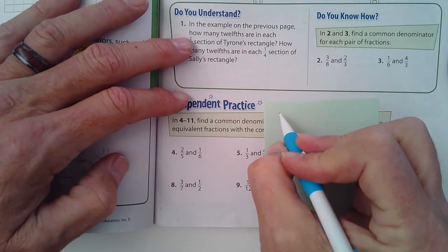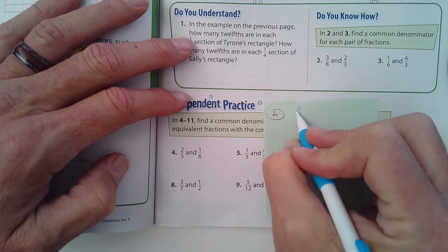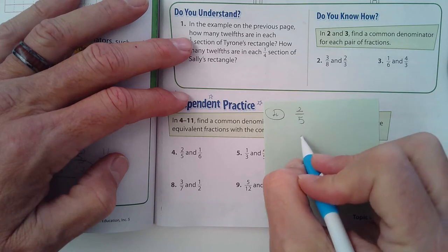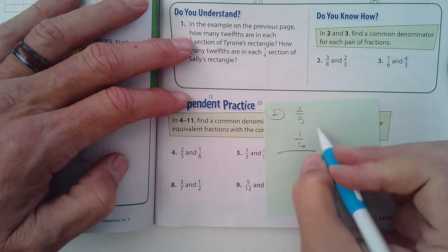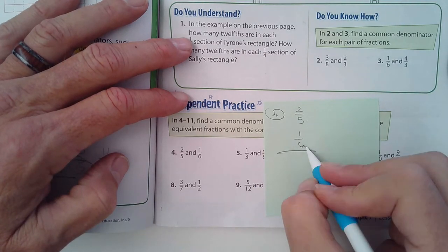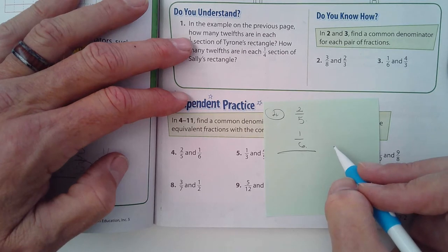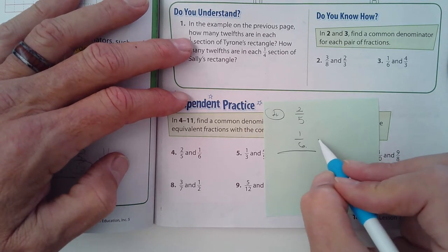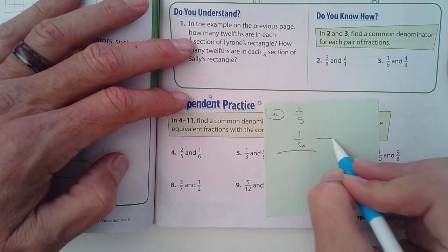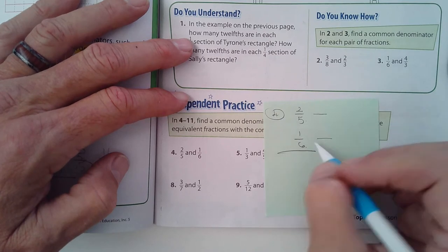It says find the common denominator for each pair of fractions, then write the equivalent fractions with the common denominator. Okay, so I'm looking at number four and it's two-fifths and one-sixth. I need a number that both the five and the six will go into. Well, let's do it the very first way they showed us. What's six times five? That's thirty.